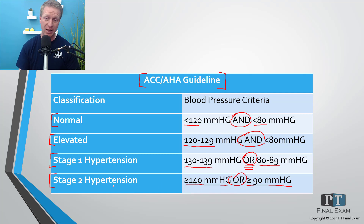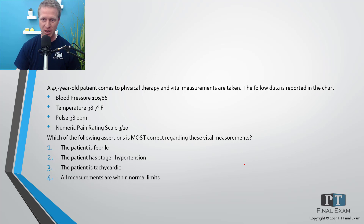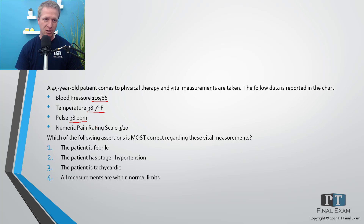The idea is to point out that you are at elevated risk the higher your blood pressure goes, and the new guidelines involve this 'or.' With that, here's a practice question — pause if you want to try it yourself. A 45-year-old patient comes to physical therapy; vitals show blood pressure 116 over 86, temperature 98.7°F, pulse 98 beats per minute, and numeric pain rating scale 3 out of 10. Which assertion is most correct: patient is febrile, patient has stage 1 hypertension, patient is tachycardic, or all measurements are within normal limits?